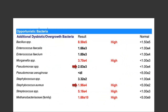Staph aureus can be linked to mast cell activation and has also been linked to food sensitivities and food allergies — we often see it elevated in patients with known food allergies and sensitivities. Pseudomonas has also been linked to food allergies and sensitivities, and there are research links between Pseudomonas and activation of mast cells — it is one of the organisms noted earlier as capable of stimulating mast cells.